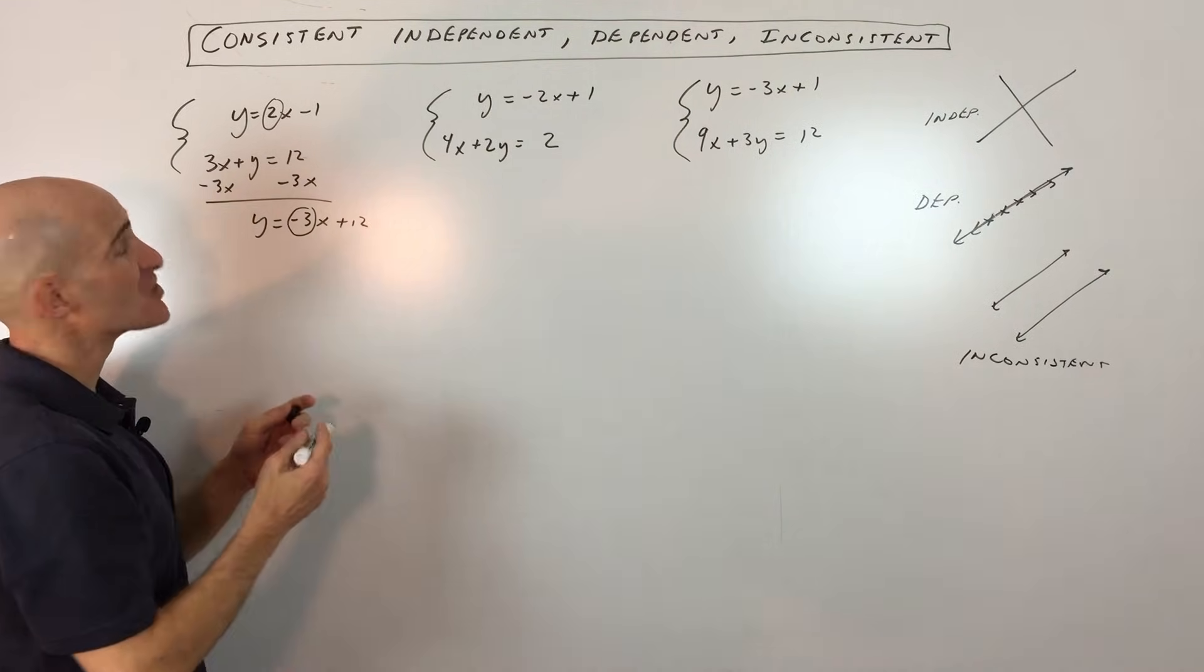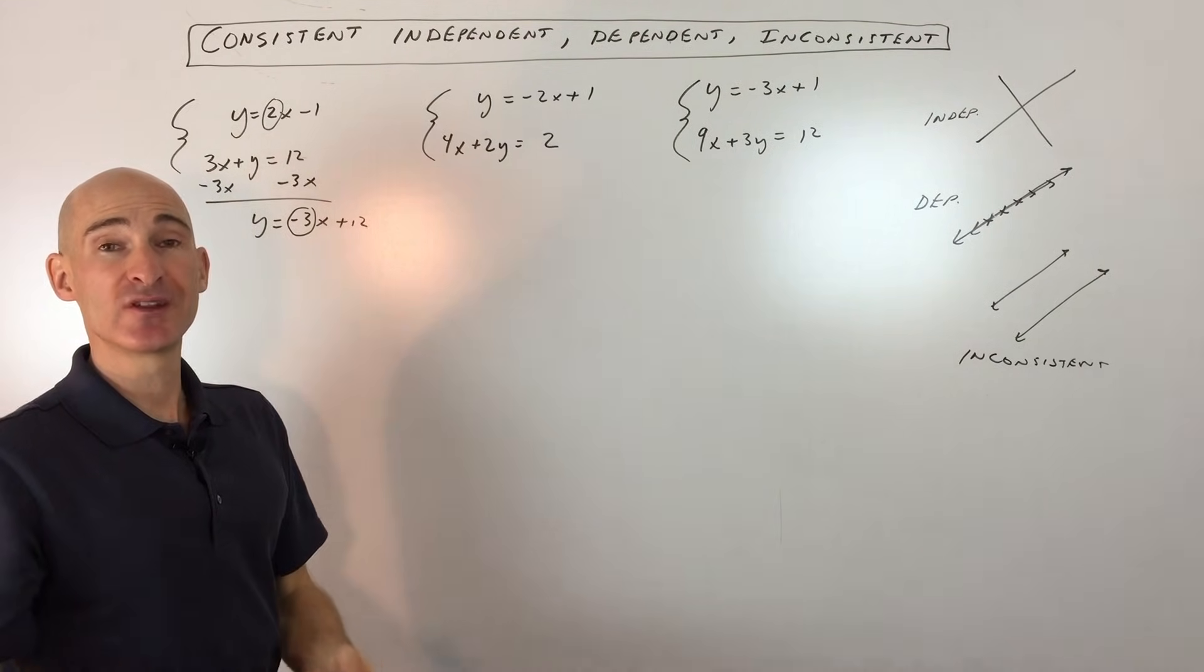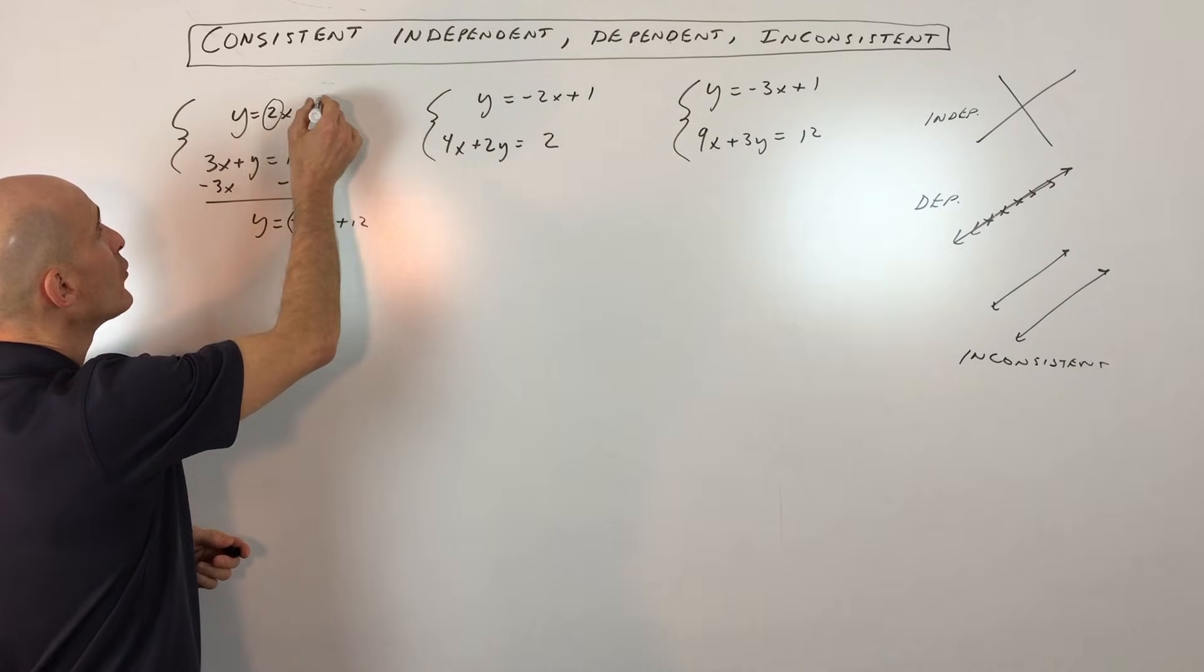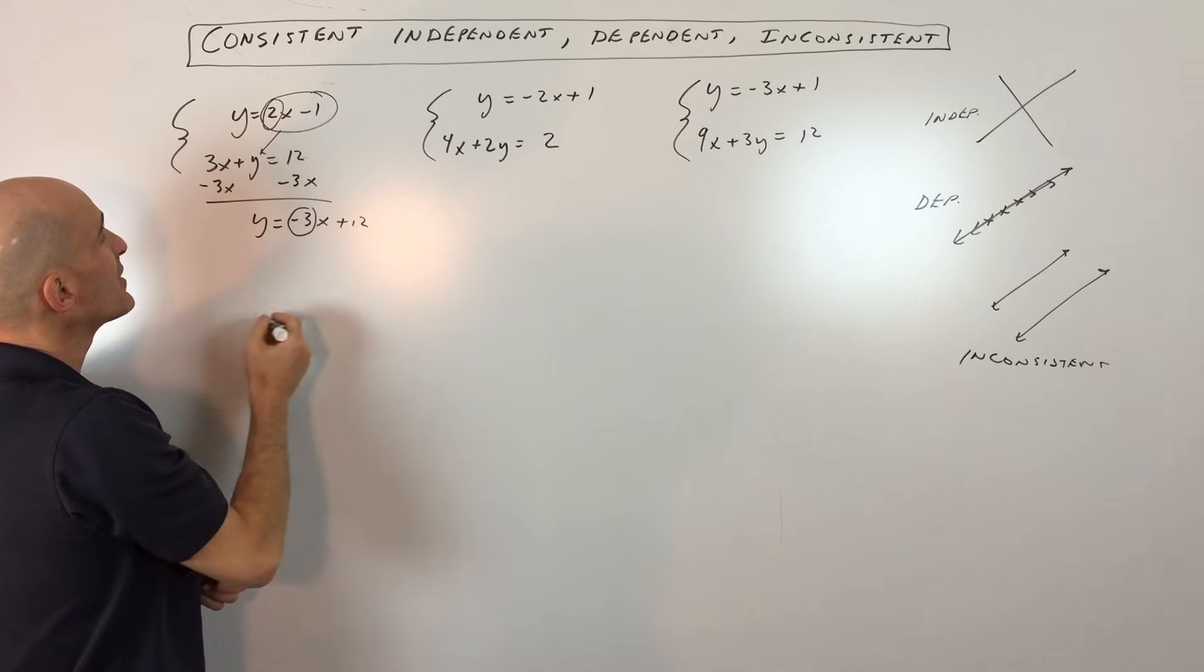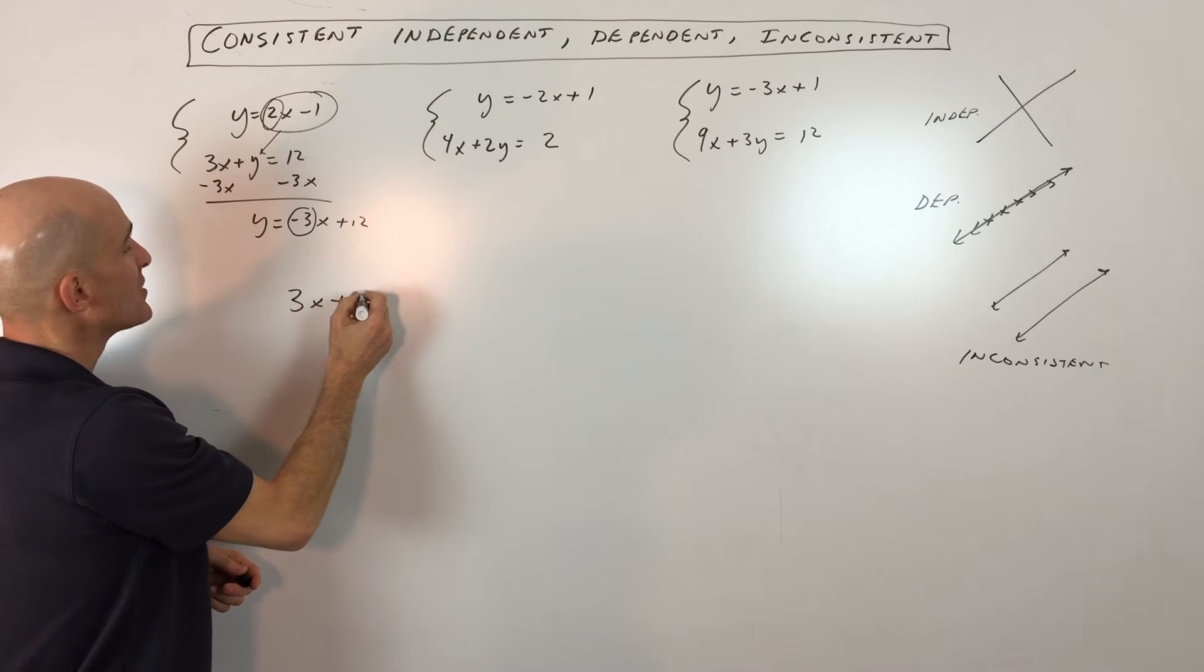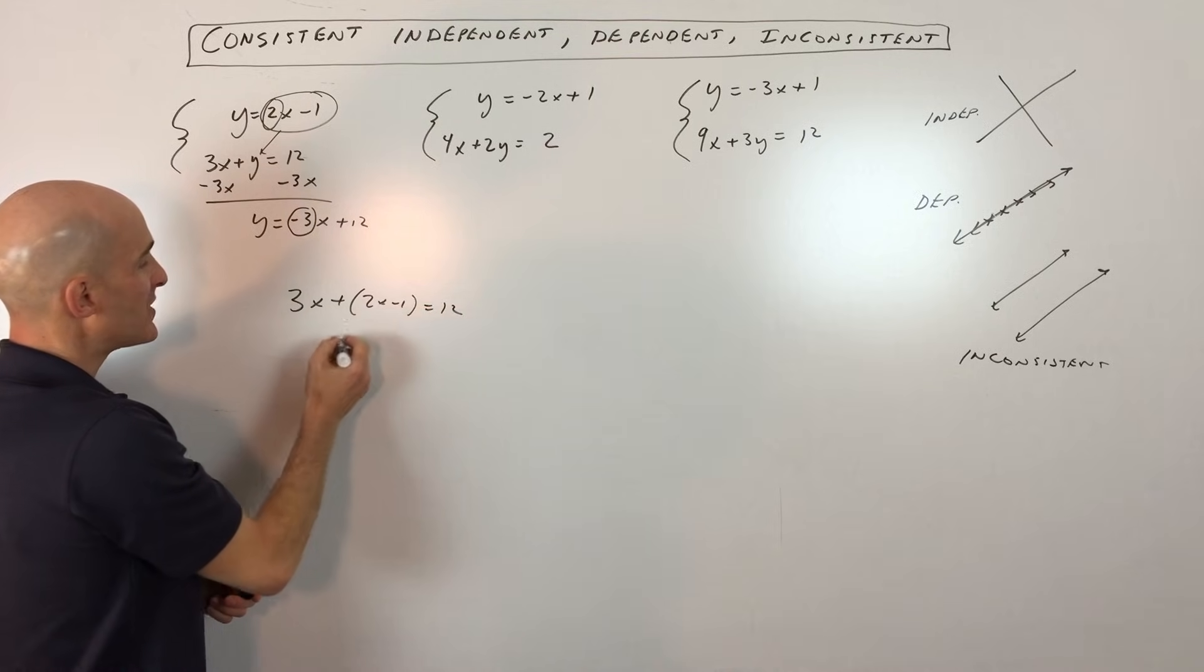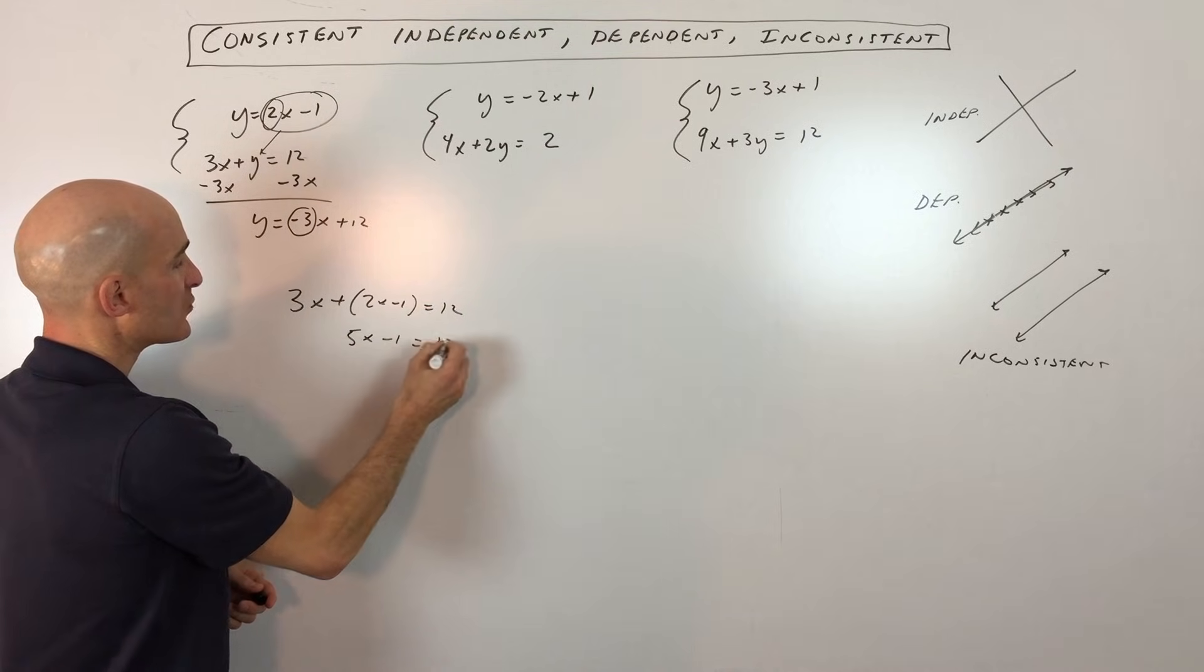Now another way to do this problem is to use either the substitution or the elimination method. And what you would do is, in this case, since we know that y equals 2x minus 1, we can put that in place of y in the second equation. So I'm just going to do that right now. Basically, we end up getting 5x minus 1 equals 12. If we add one to both sides, we get 5x equals 13.